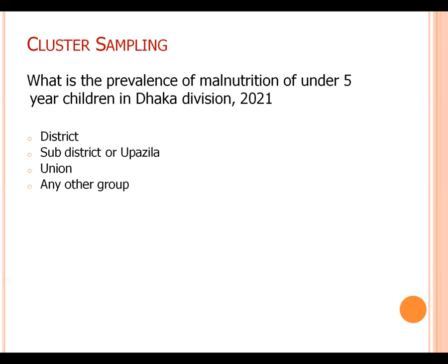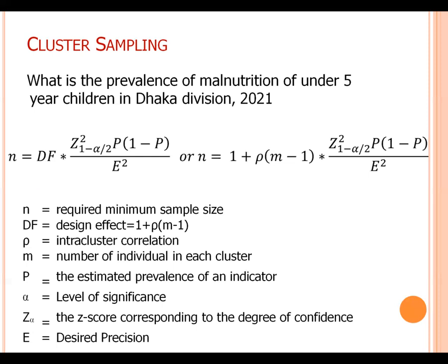Now we have to calculate a sample size. We have to adjust design effect to calculate sample size for cluster sampling. Where DF is the design effect described in previous slide. Rho is the inter-cluster correlation coefficient. m is the average number of individuals in each cluster.